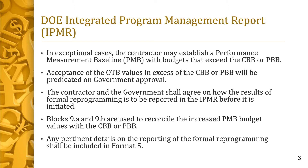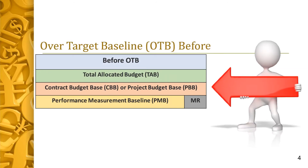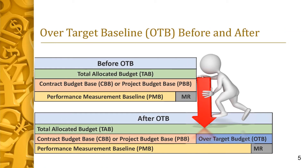Let's look at some examples of how the components of the CBB or PBB change as a result of an OTB. This chart shows EVMS budget building blocks before an over-target baseline. Before an OTB, the total allocated budget (TAB) is equal to the CBB or PBB. The performance measurement baseline and the management reserve summed to equal the CBB or PBB. After the OTB, the PMB and MR are increased by the total value of the OTB. In contrast, the CBB or PBB or project target for incentives is unchanged.